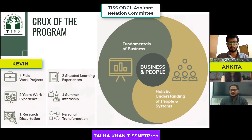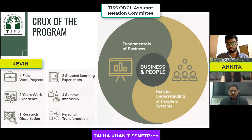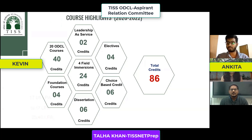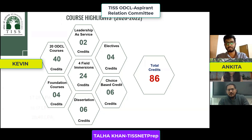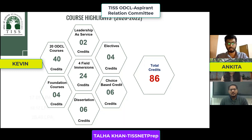There is also a Leadership as Service project where students get mapped to a social impact organization, work with its founders and leadership, and help take them through an OD transformation project. Overall, the program offers holistic academic as well as experiential learning. In total, there are 86 credits planned over two years, distributed among 20 ODCL courses, Leadership as Service, electives, field immersions, and dissertation — with significant credits given to hands-on industry experience.